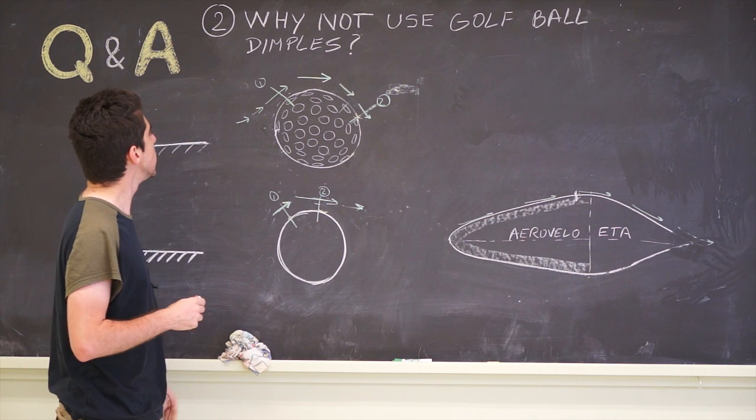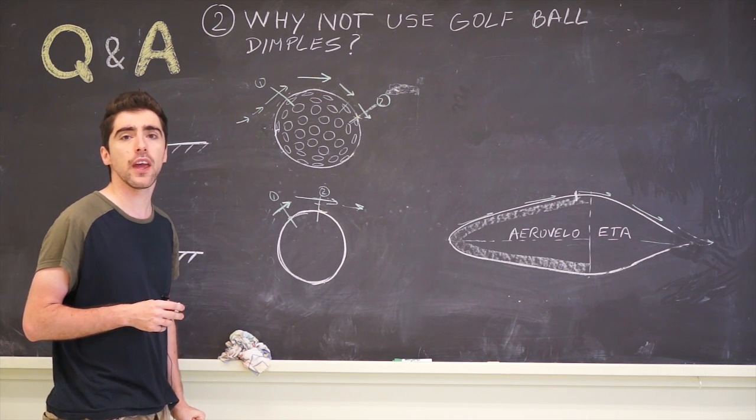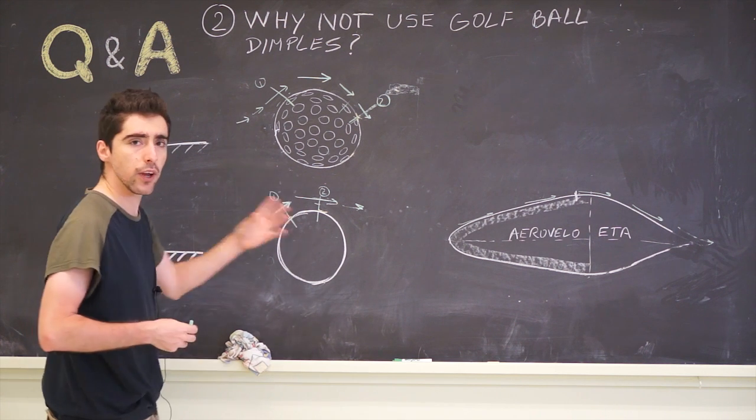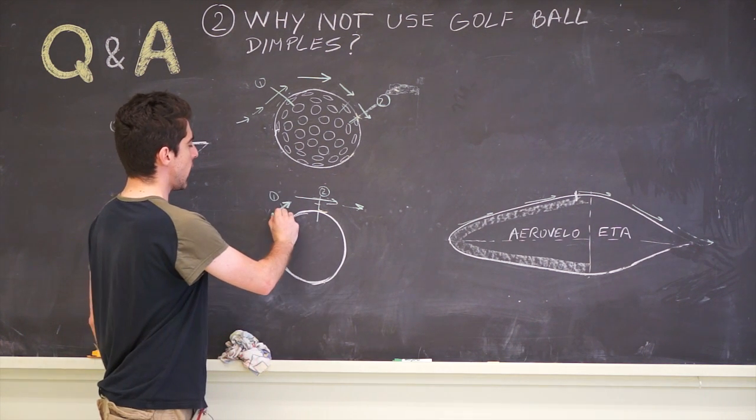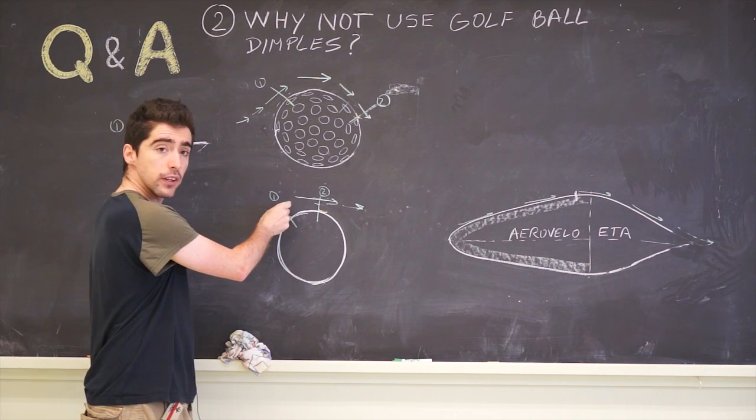To understand why, let's look a bit in detail at what happens with the air next to an object. If we have a smooth sphere, we have air traveling next to it. We call this the free stream velocity.